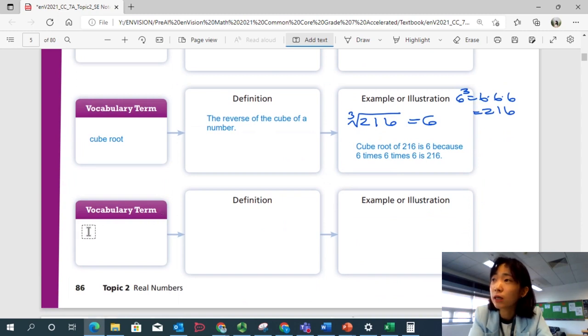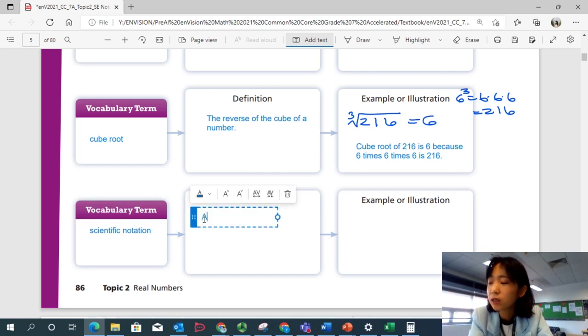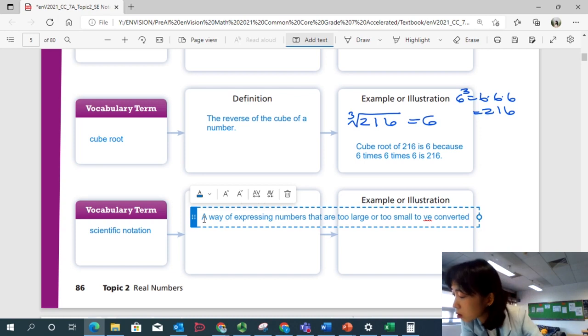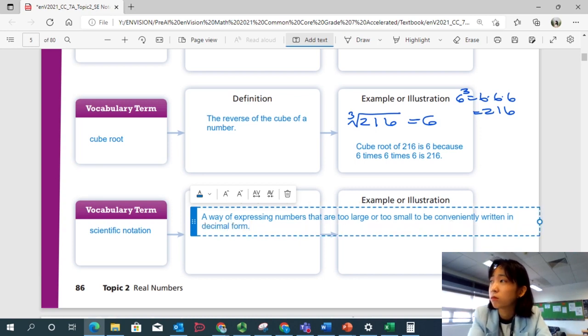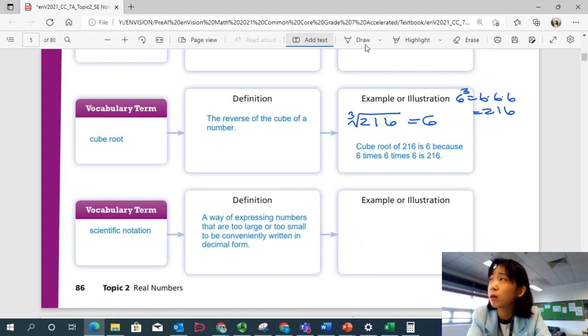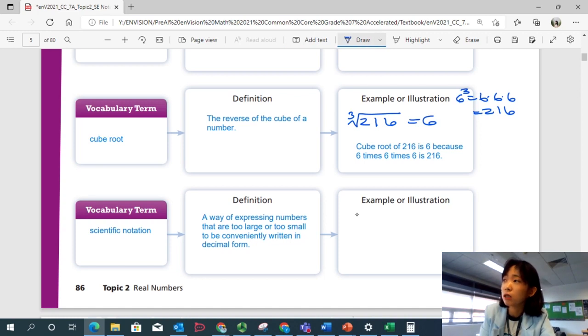The last vocabulary we're going to look at is scientific notation. Of course, there are a lot of other vocabularies that we're going to see in this topic. But these are the key vocabularies that I think are very important. Scientific notation is a way of expressing numbers that are just too large or too small so that we can convert to be conveniently written in decimal form. Okay, so for an example, we have a big number such as 7 million. Right? That's a big number.